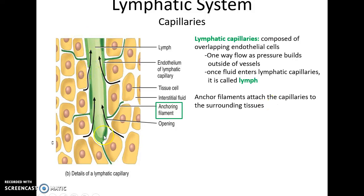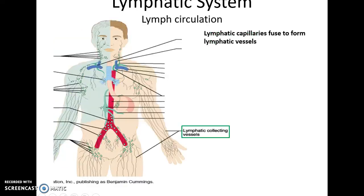Lymphatic capillaries are super thin, one cell layer. They have anchoring filaments that connect them in place, and the cells slightly overlap. As the pressure from the fluid building up outside gets greater and greater, it'll eventually be great enough that fluid will pass between these cells into the lymphatic capillaries. This is a one-way route — not a circulation, but a one-way route.